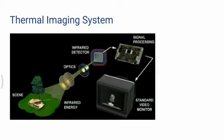And the focused light is scanned by a phased array of infrared detector elements. The detector elements create a very detailed temperature pattern called a thermogram. It only takes about 1/30th of a second for the detector array to obtain the temperature information to make the thermogram. This is the infrared detector.